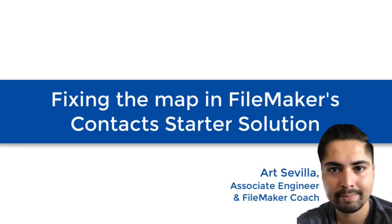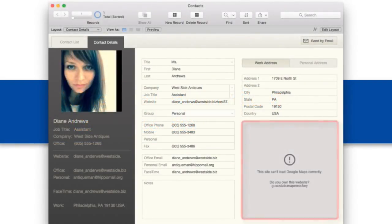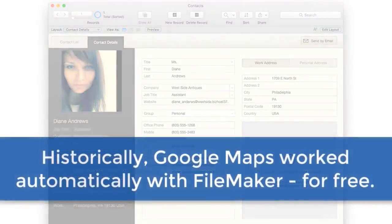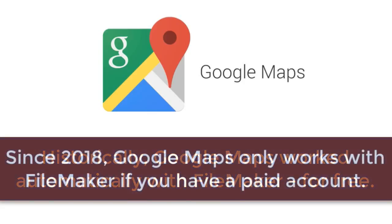The issue that came up about the middle of 2018 is the fact that Google is requiring that people who use their mapping services — or really most of their services — actually identify themselves and are not anonymous. So historically if you played with Google mapping and FileMaker, the maps would show up and as long as you didn't abuse it and only used them a handful of times during the day, no one really cared. However, that changed in mid-2018 because Google is requiring each user to uniquely identify themselves. So Art, what does this mean for us?